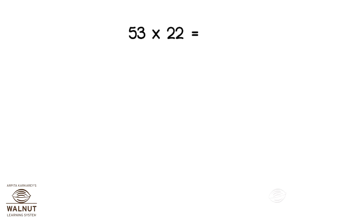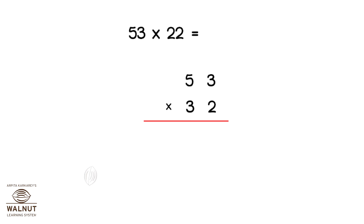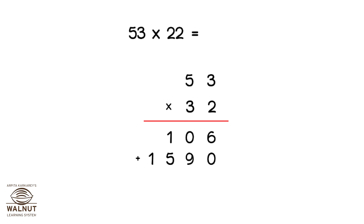Let us now try a few multiplications with the column method. We write the numbers properly one below the other and start. We first multiply 53 by 2, then put in a 0, and multiply 53 by 3. We add the 2 products and we get the answer.